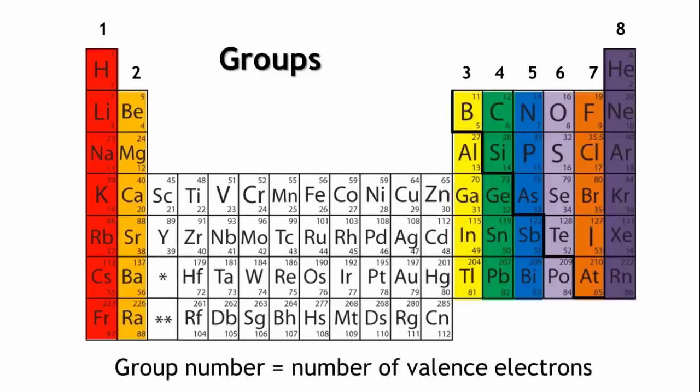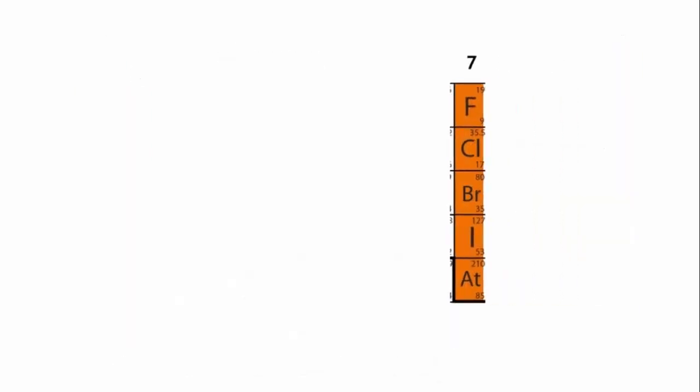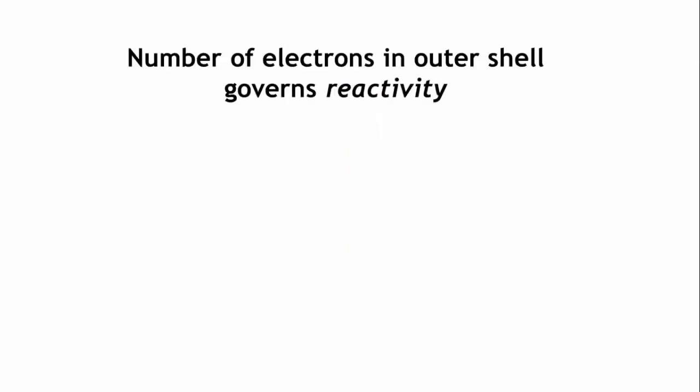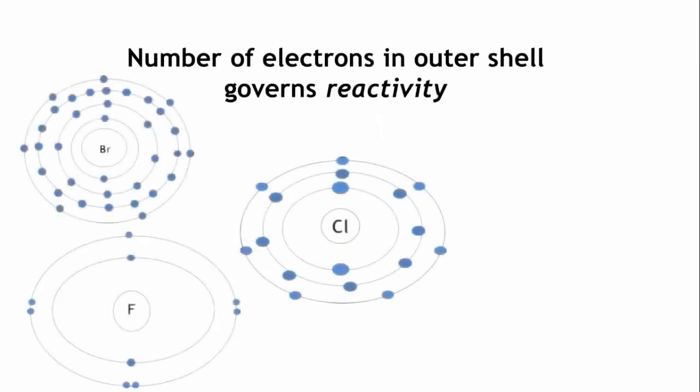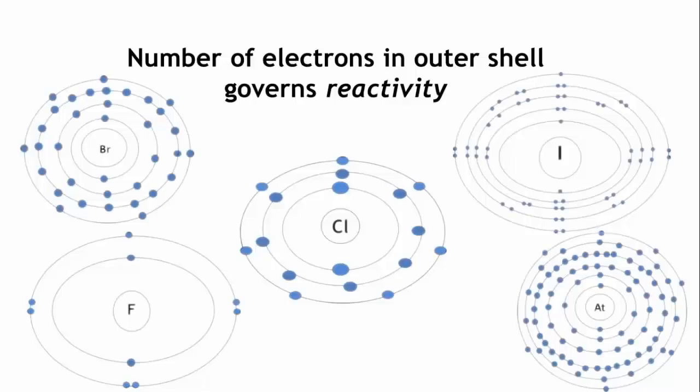The group number can tell you how many electrons are in this shell. For example, let's look at group 7: fluorine, chlorine, iodine, bromine, and astatine. They all have seven electrons in their outermost shell and all exhibit similar chemical characteristics.